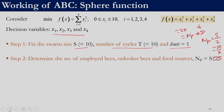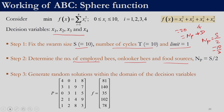The next step is to determine the number of employed bees, onlooker bees, and food sources. As discussed, it is S/2, so 10/2 = 5 food sources. The next step is to generate a random population — these are our 5 food sources, food source 1, 2, 3, 4, 5, and these are their corresponding objective function values obtained by plugging the solutions into x1² + x2² + x3² + x4².